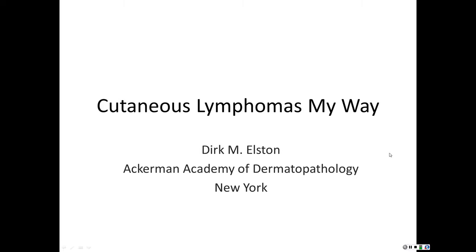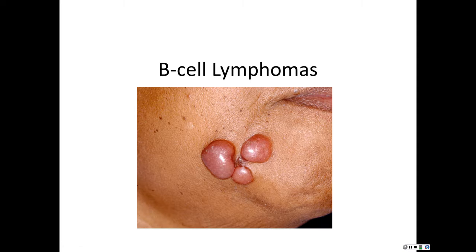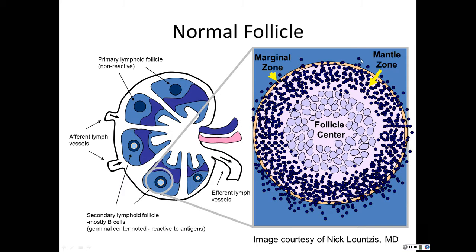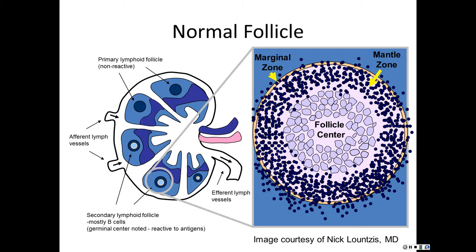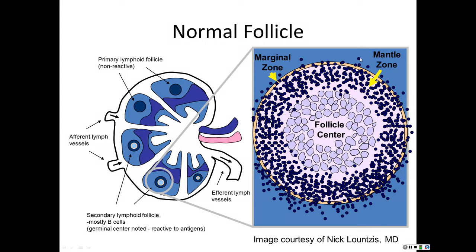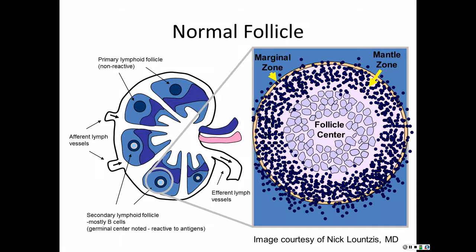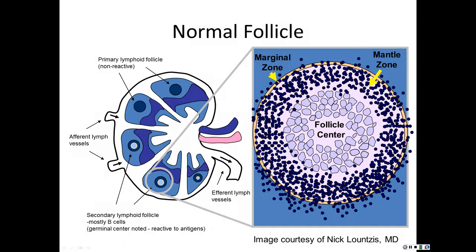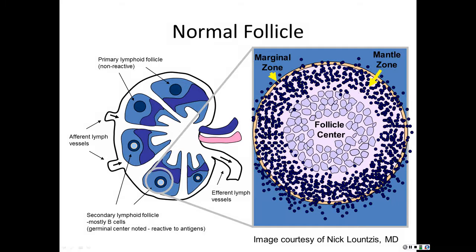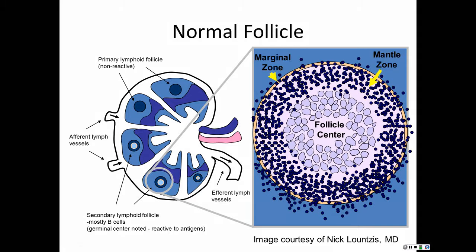We're going to focus on the B's for this portion. In a normal follicle, the mantle zone is most of the lymphocytes you see. Other than some places like hernia sac, you really don't see a lot of the marginal zone. Mantle zone lymphocytes are pretty well black — it's all those black cells outside of a germinal center. Marginal zone cells are gray, and then the follicle center cells are larger, paler, with vesicular nuclei.